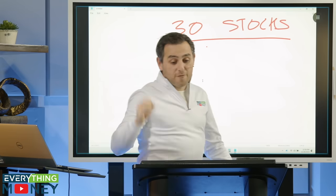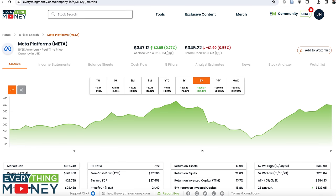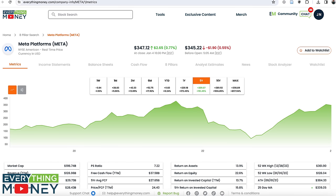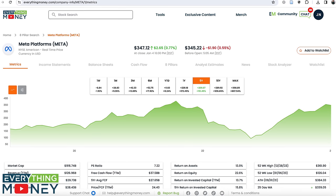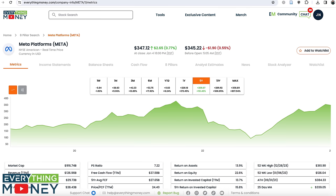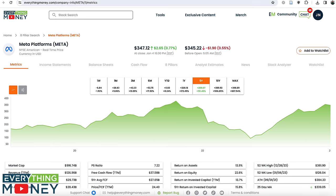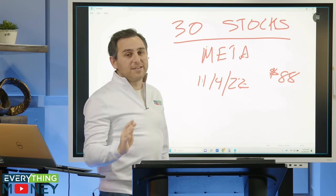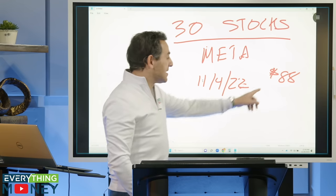Stock number four, Meta. Meta, back on November 4th, 2022, was at $88 a share. It is now at $350 a share. It's up over four times in the last one year.